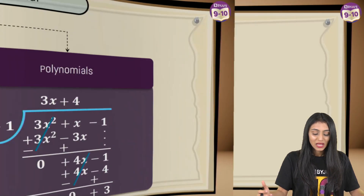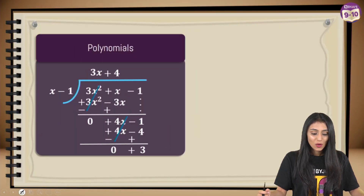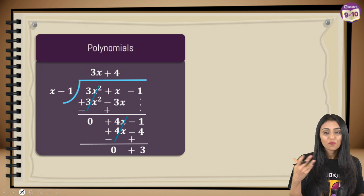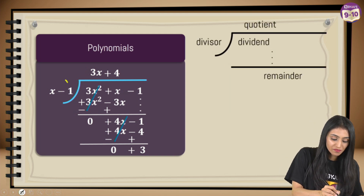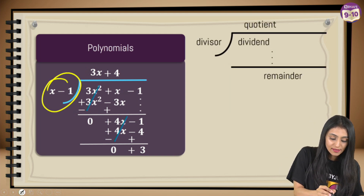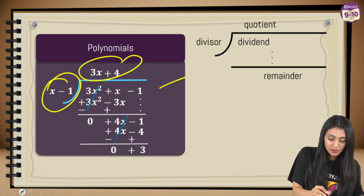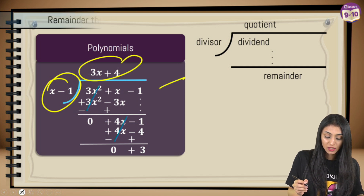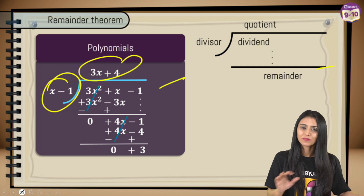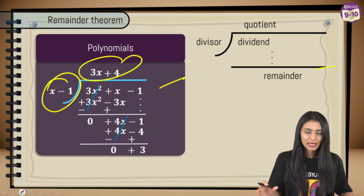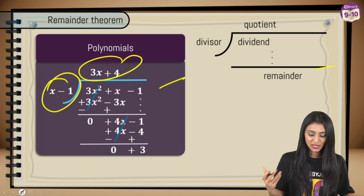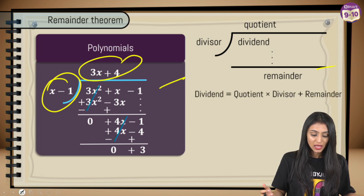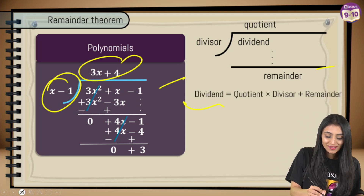So to recap: the divisor is x − 1, the quotient is 3x + 4, the dividend is 3x² + x − 1, and the remainder is 3. This is something we've been doing for years using the division algorithm.